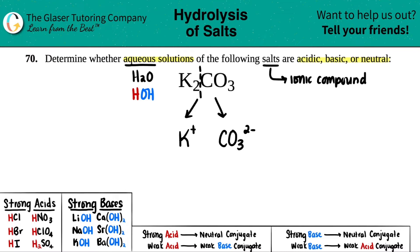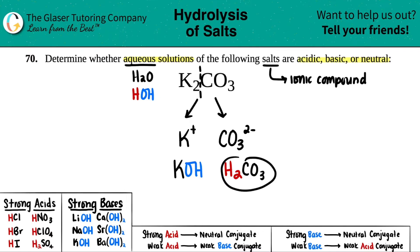Let's make those compounds. K will be with the hydroxide — KOH. And then to make the correct compound, it would be carbonic acid, H2CO3.